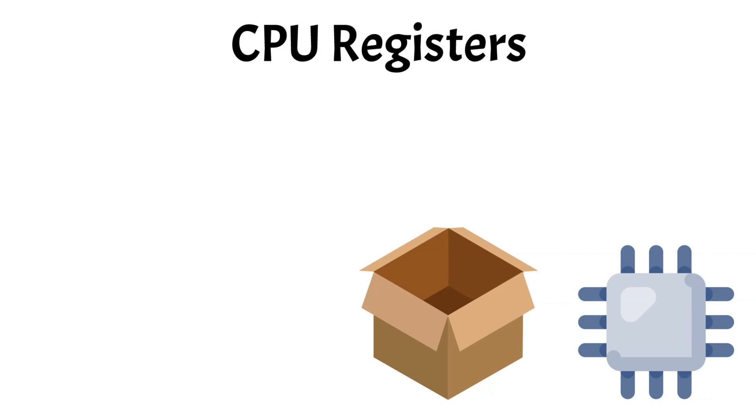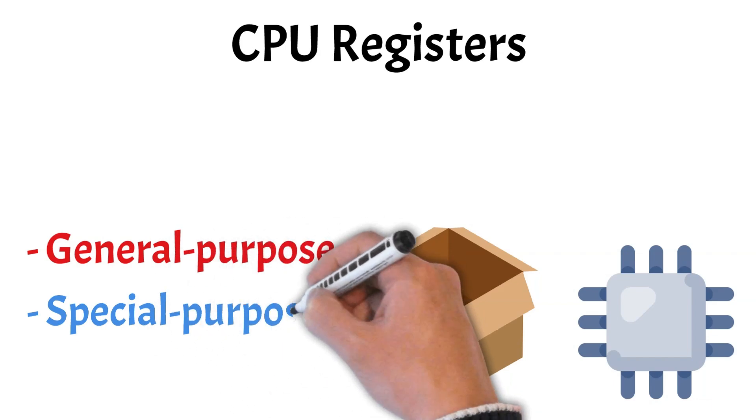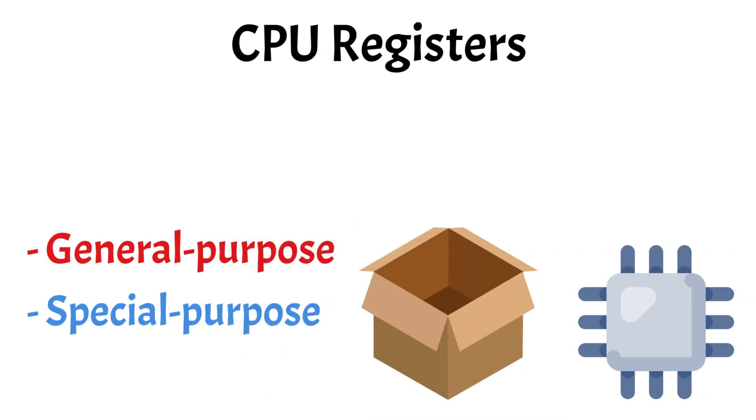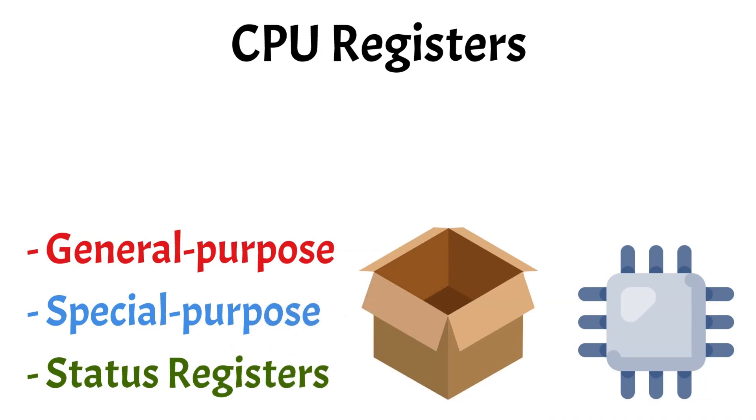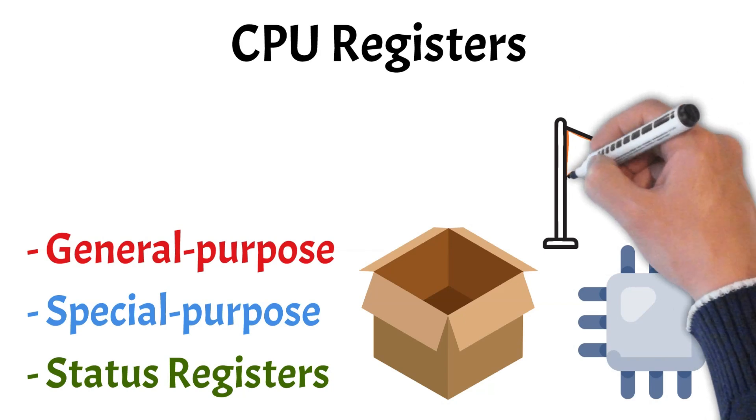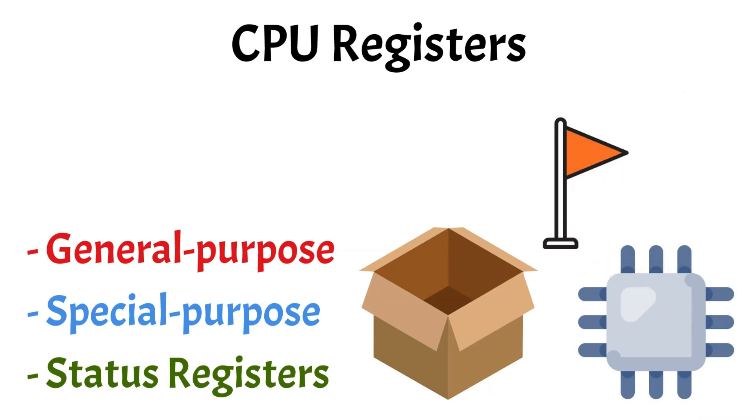There are different kinds of registers, each designed for specific purposes, such as general-purpose registers, which can hold data for various operations, special-purpose registers, like the instruction register, which holds the current instruction being executed, and the program counter, which keeps track of the address of the next instruction, and status registers, which maintain information about the current state of the CPU, including flags for arithmetic operations.